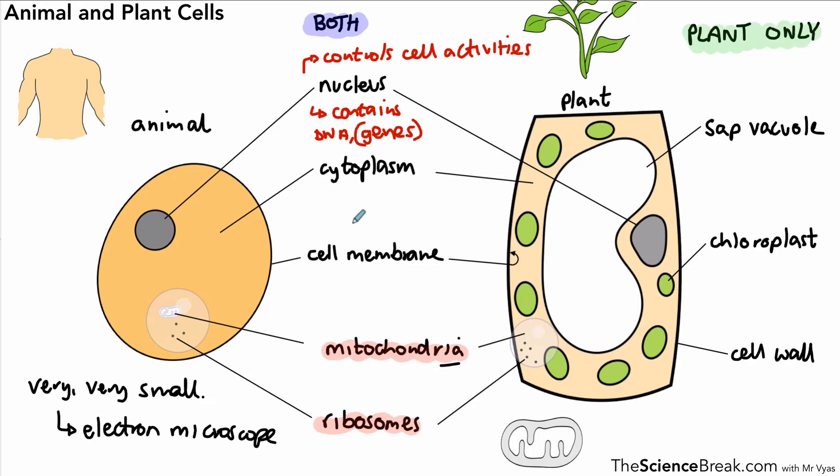Next is the cytoplasm—this is where most of the chemical reactions happen in the cell. It's a watery solution where most of the chemical reactions that the cell needs to carry out happen. Then we've got the cell membrane—it controls what goes in and out, usually based on the size of molecules.